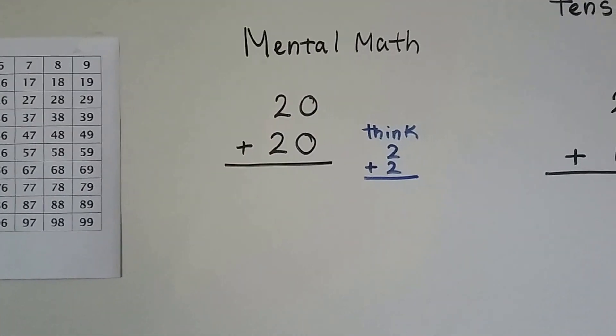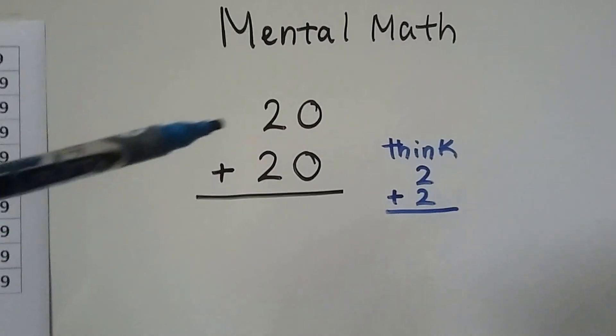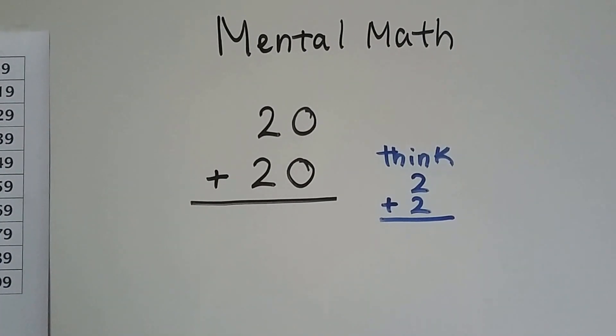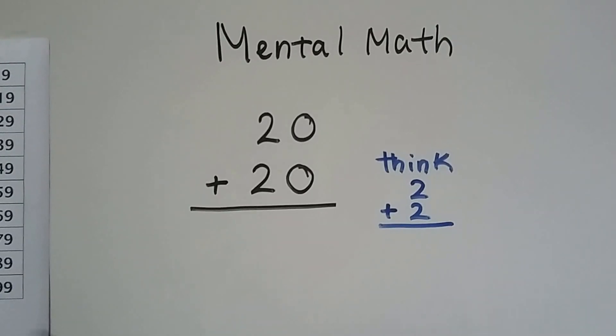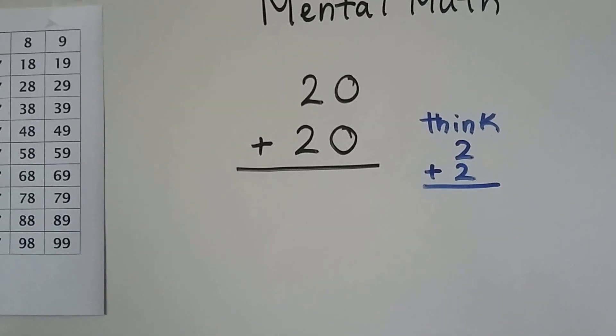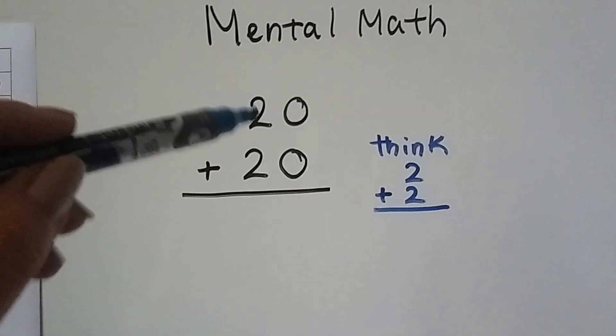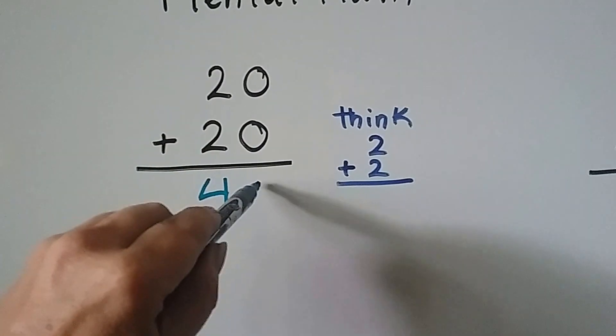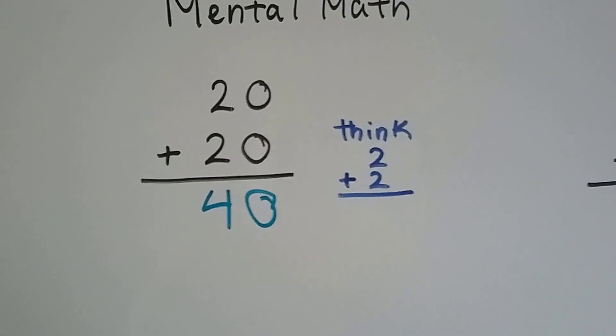Mental math is a good way to do it. If we have to add 20 plus 20, we can just think 2 plus 2. We don't need to count our fingers. We don't need to use a hundred chart or models. We can just think 2 plus 2 is 4, and just put the zero down. We could do that in our head.